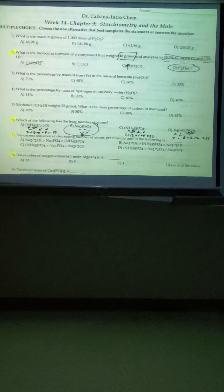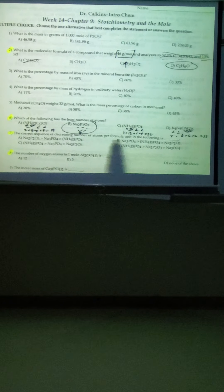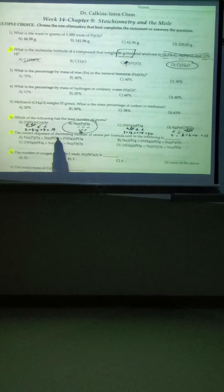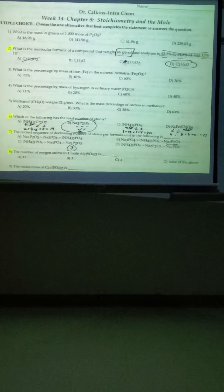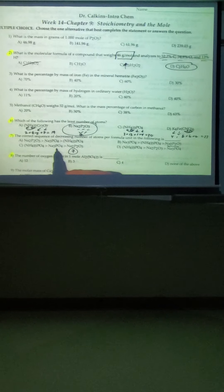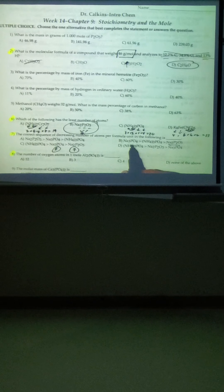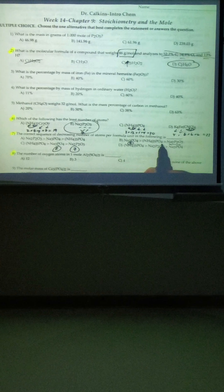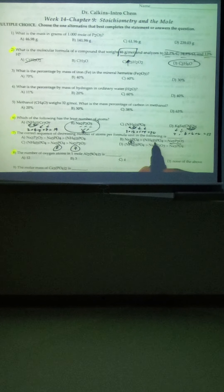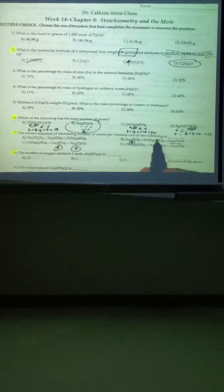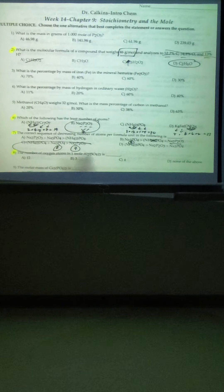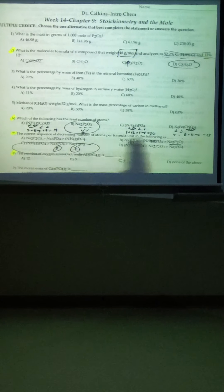Number 7 is the same thing, just a different way — they want the correct sequence of decreasing number. We already know the compound with 7 atoms was the answer to the previous problem, so that should be at the end. For the new one not seen above, it has 3, 4, and 4, so 8 atoms. Another has 8 in the front but way too many total. Ammonium phosphate from up here had 20.